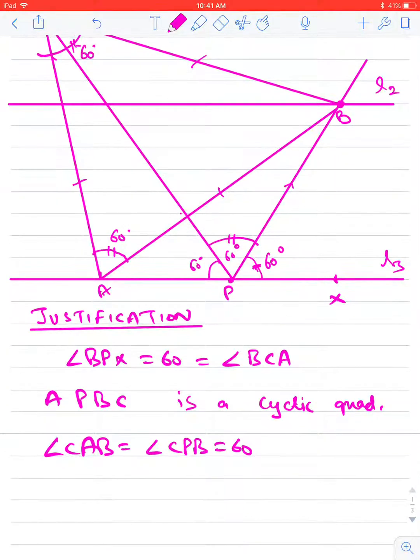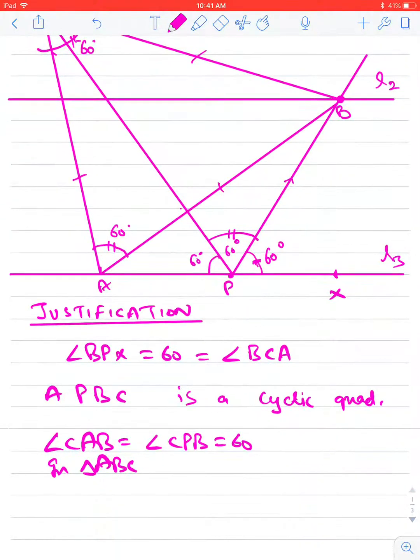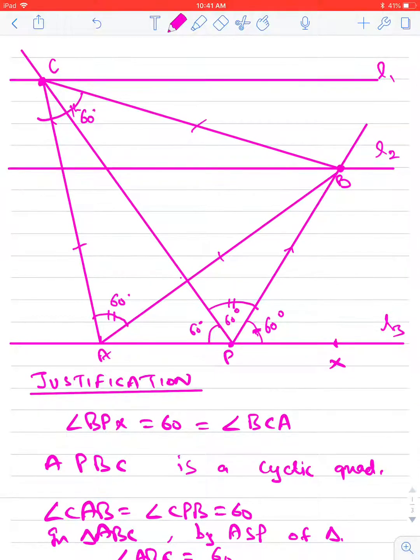So in triangle ABC, by angle sum property of a triangle, angle B also comes out to 60 degrees. Therefore, we get the required triangle ABC in which angle A equals angle B equals angle C, all equal to 60 degrees.